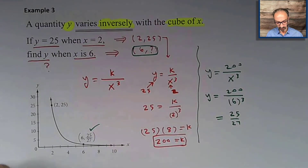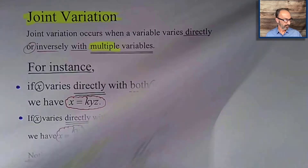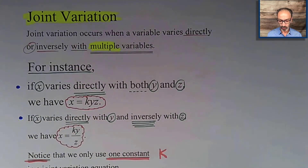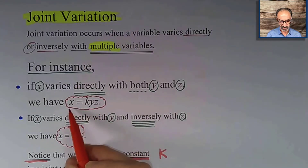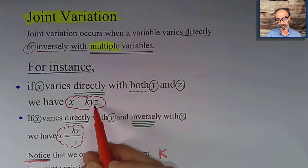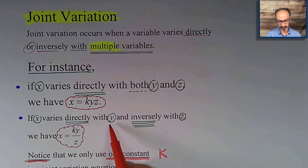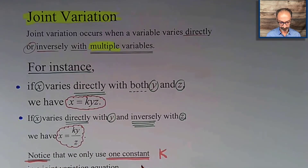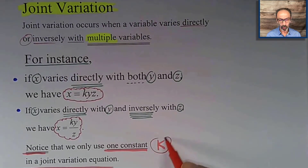Joint variation occurs when a variable varies directly or inversely with multiple variables. Two examples: if x varies directly with both y and z, we have x equals k times y times z. If x varies directly with y and inversely with z, then y goes on top and z goes in the denominator, so x equals k times y over z. For joint variations, we only use one k, not multiple constants.